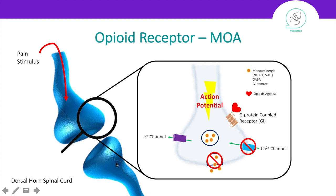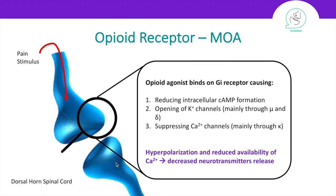Both actions will halt or stop the signal from being transmitted to the next neurons — so no more pain. In summary, opioid agonists bind to the Gi receptor causing a reduction in cyclic AMP, either opening the potassium channel or closing the calcium channel, giving you an end result of decreased neurotransmitter release.